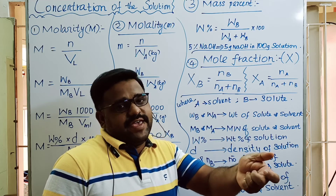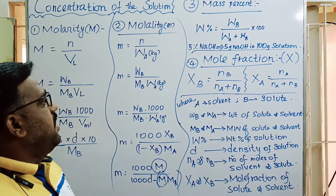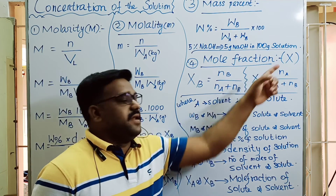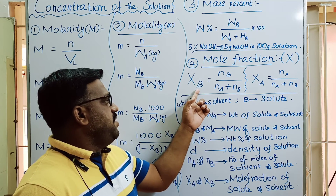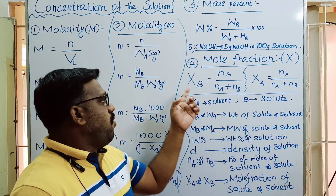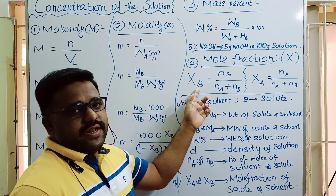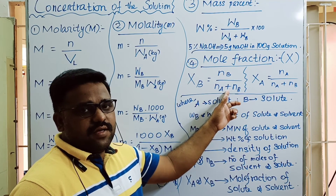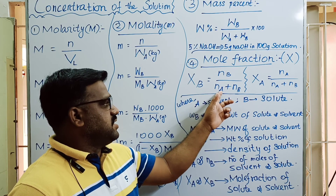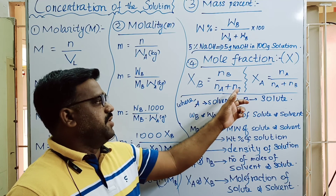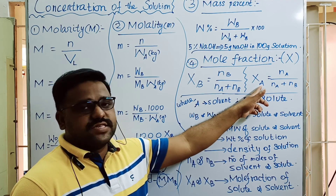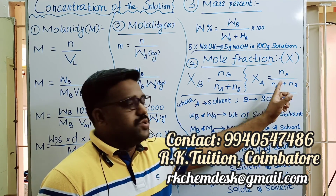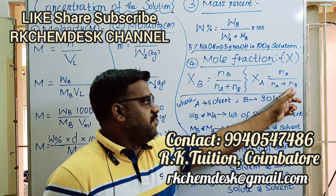The last concentration is mole fraction, represented by capital X. B is the solute and A is the solvent. The mole fraction of solute XB equals the number of moles of B divided by total number of moles, which is number of moles of A (solvent) plus number of moles of B (solute). Similarly, mole fraction of solvent XA equals moles of A divided by total moles.